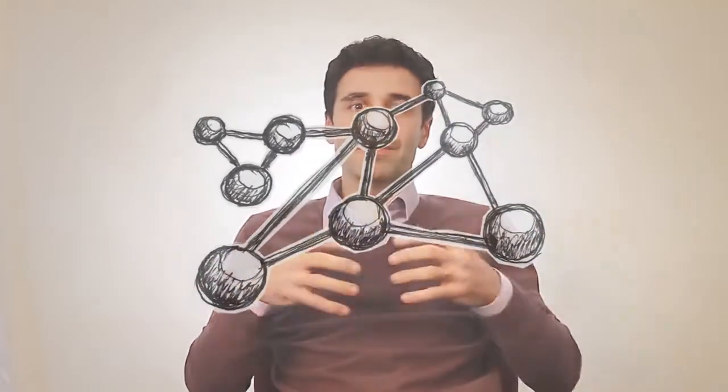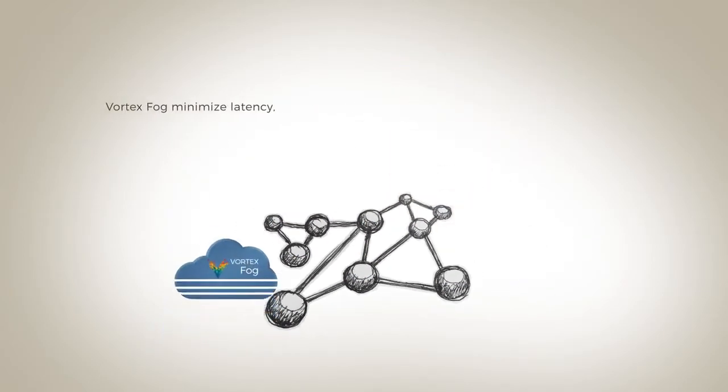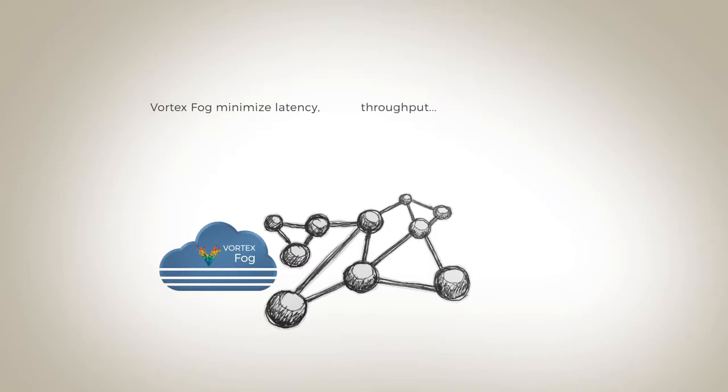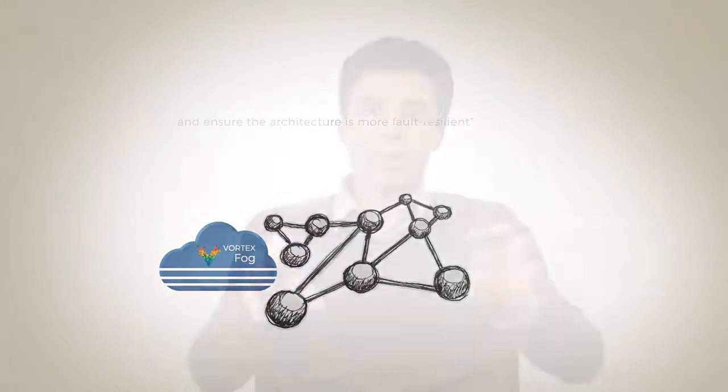In a fog subsystem, you have the necessity of very efficiently exchanging data and taking advantage of network peculiarities. For instance, in a fog subsystem you might be able to exploit multicast, so Vortex will allow you to take advantage of that to minimize latency and throughput, and ensure an architecture that is more fault resilient — because you don't have any single point of failure that someone can take down and cause the infrastructure to stop working.